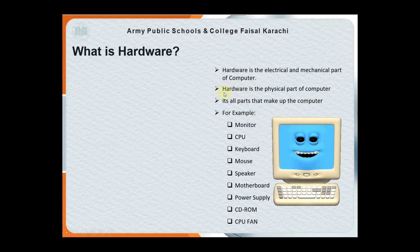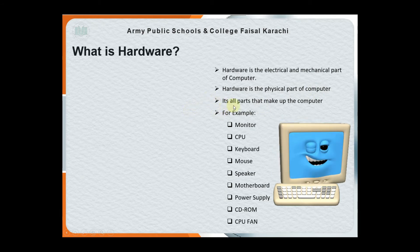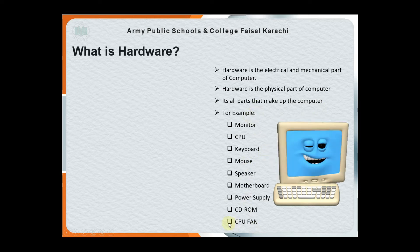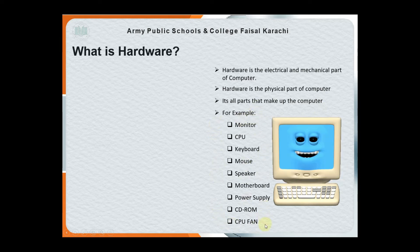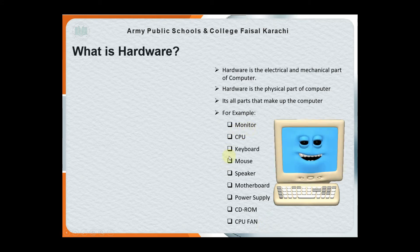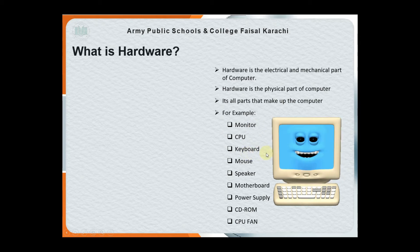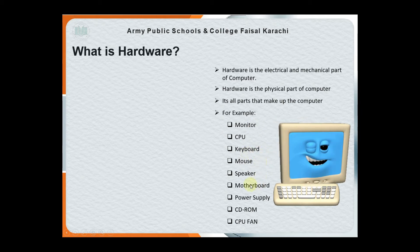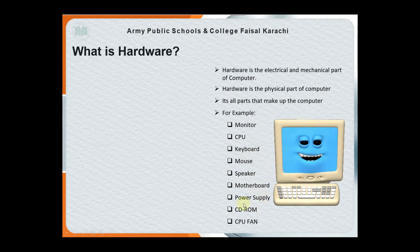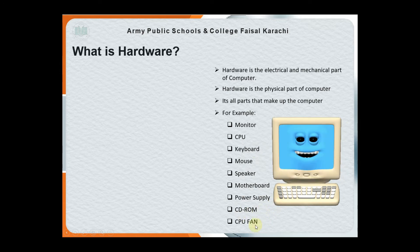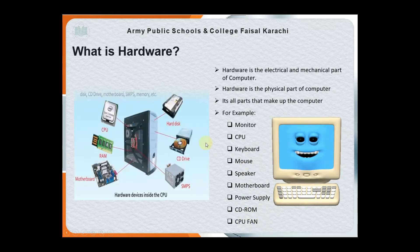All parts are hardware because these are the physical parts of a computer — it's all parts that make up the computer. For example, there are many computer parts you can see at home or school, like monitor, CPU, keyboard, mouse, speaker, motherboard, power supply, CD-ROM, and CPU fan. These are all parts of the computer.